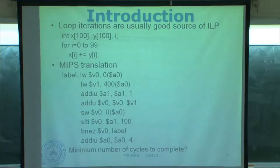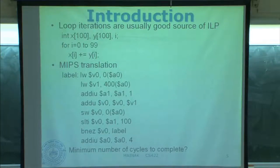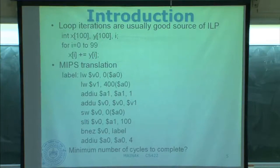Let me show you the pipeline. This is the first load, second load, add-immediate-unsigned, and add-immediate-unsigned. So if I have a 5-stage pipe...